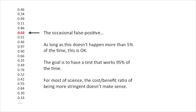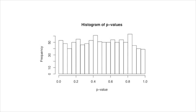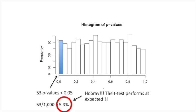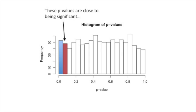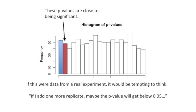The goal is to have a test that works 95% of the time. For most of science, the cost-to-benefit ratio of being more stringent doesn't make sense. Here's a histogram of all 1,000 p-values. And here are the p-values that were less than 0.05 — I had 53 of them. 53 divided by 1,000 is 5.3%. This means the t-test performs as expected.